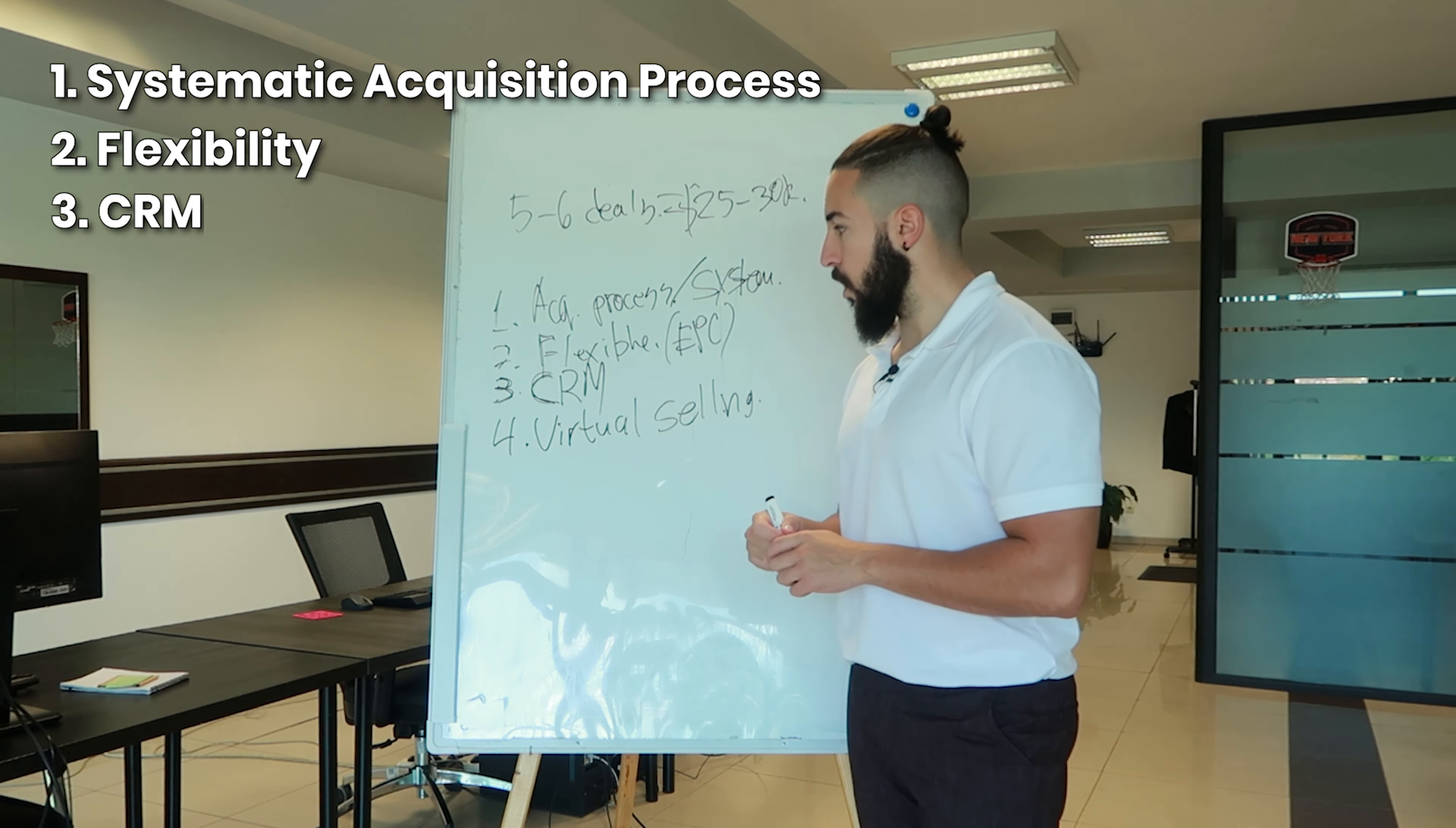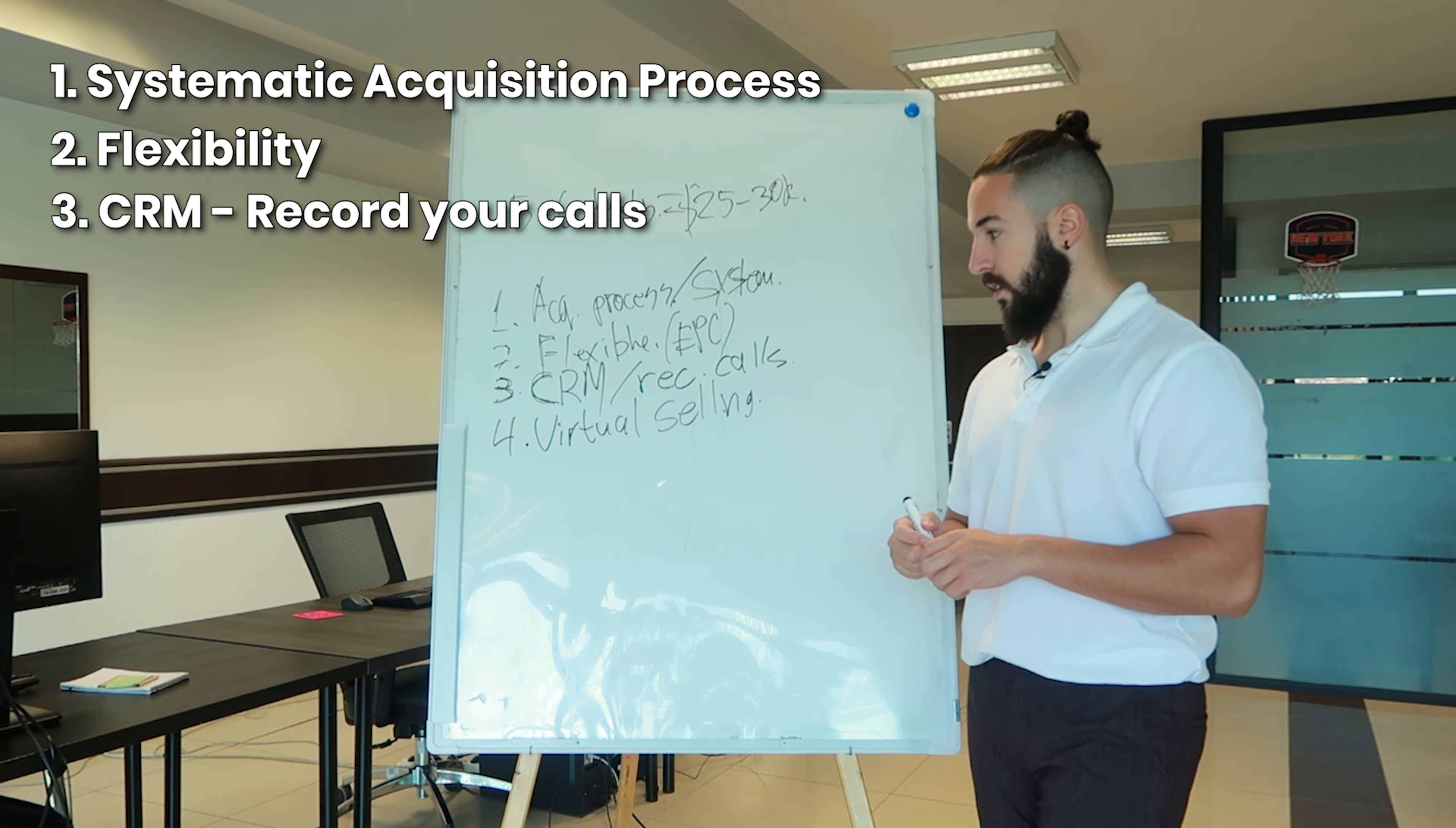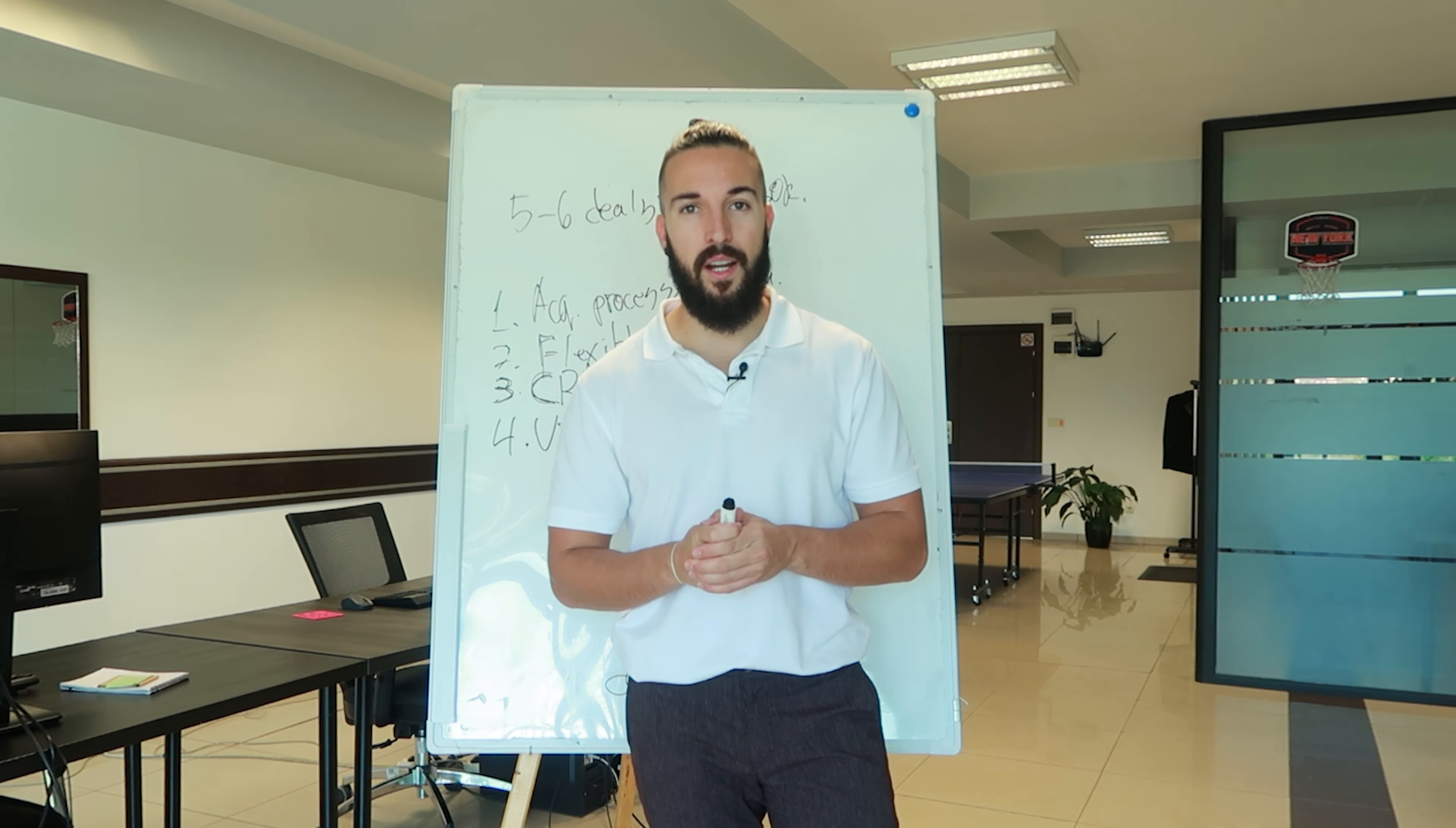You need to be flexible. You need to have a CRM to keep track of everything that's going on. And you need to also record your calls. Make sure that CRM has the capability of actually being able to record your calls on every single call so you can actually improve. Because if you cannot improve, you're not going to make progress in what you're doing. You're leaving money on the table at that point. And the fourth thing is virtual selling. I mean, even if someone is in the same neighborhood, there's no point in going to the house when you know that you can seal the deal from the telephone or from Zoom.